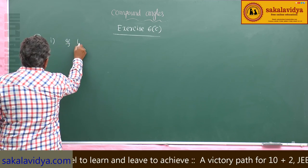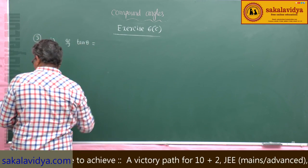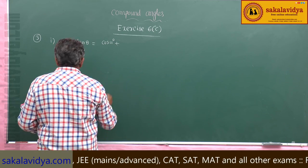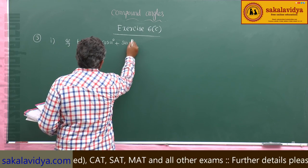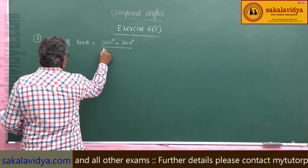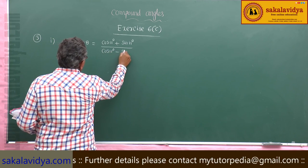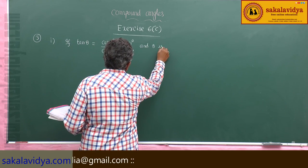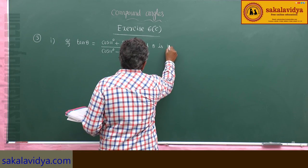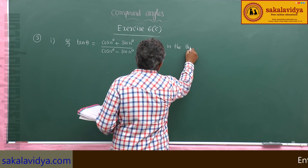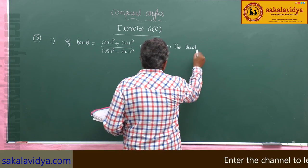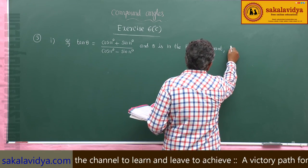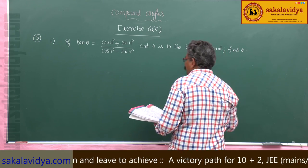If tan theta is equal to cos 11 degrees plus sin 11 degrees divided by cos 11 degrees minus sin 11 degrees, and theta is in the third quadrant, find theta.